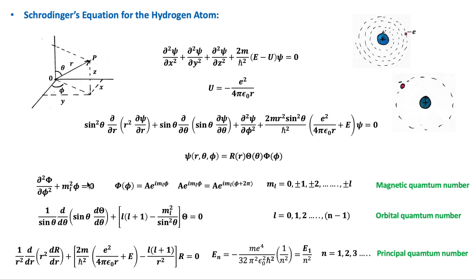The solution of the first (phi) equation requires that, since psi must have a single value at a given point in space, the function at a certain angle must equal the function at that angle plus 2π. This can happen only if m_l is equal to specific integer values, and this constant is known as the magnetic quantum number. The solution for the second (theta) equation exists provided that the constant l is an integer equal to or greater than the absolute value of m_l, meaning m_l can have a maximum value of l. This constant l is known as the orbital quantum number.